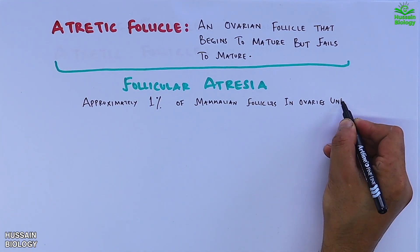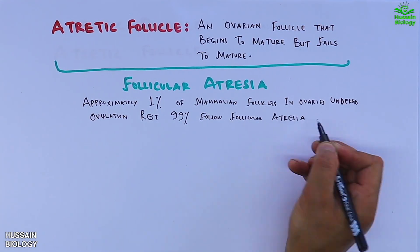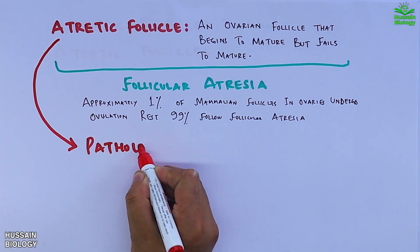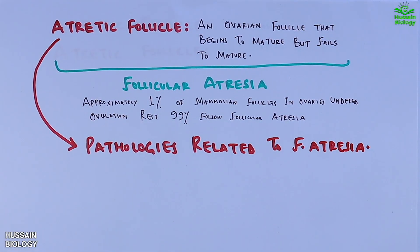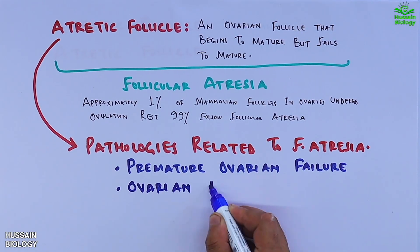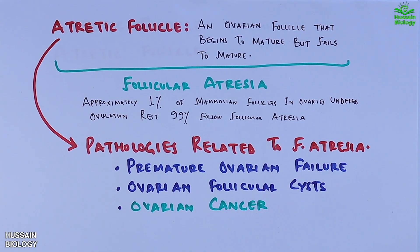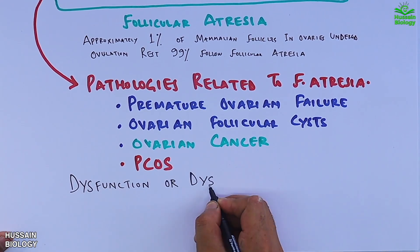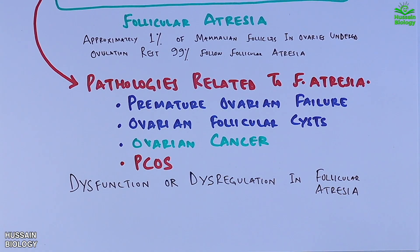Now let's see the pathologies related to follicular atresia. We have premature ovarian failure, ovarian follicular cysts, ovarian cancer, and PCOS. We see the dysfunction or dysregulation in follicular atresia leads to these pathologies.